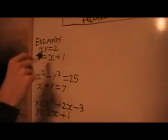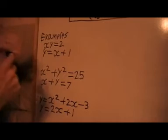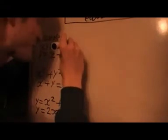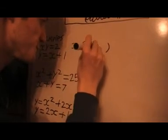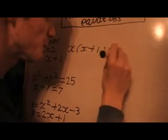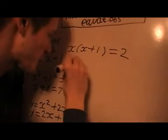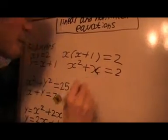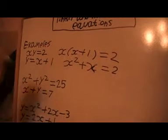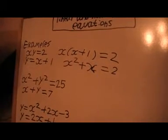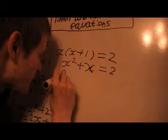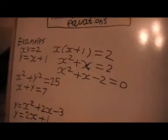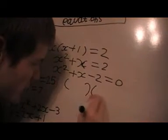So, the first example here, we've already got y the subject in this equation, so that's good. I can substitute that straight in to here. If y is that, then I can rewrite my first equation as this, and then I'm going to multiply out the brackets. That's what we get. We'll move the two over and that becomes minus two.